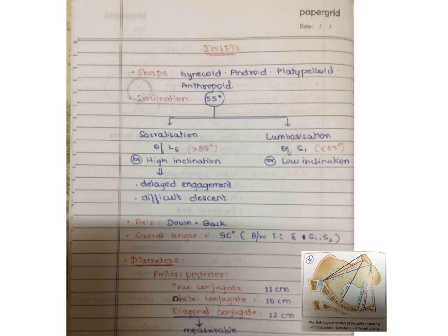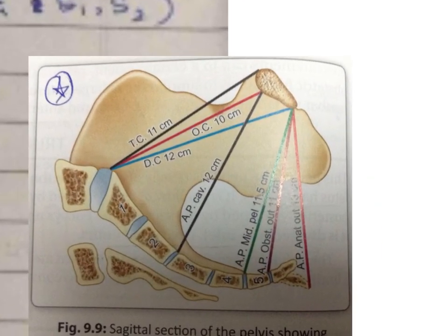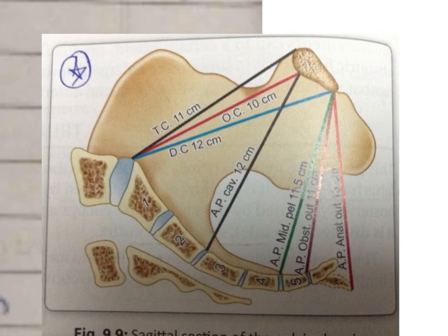In lumbarization of S1 or lower inclination, there are no significant difficulties and delivery is almost normal. The axis, also called the curve of Carus, is directed downwards and backwards. The sacral angle is the angle formed between the true conjugate and the first two pieces of the sacrum, and it is a right angle (90 degrees).